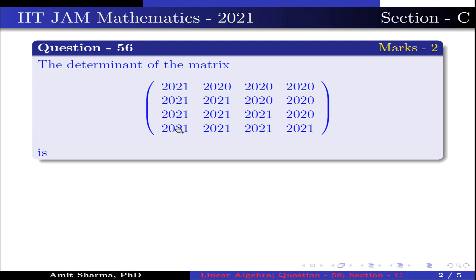2021, 2021, 2021, 2020 in the third row, and 2021, 2021, 2021, 2021 in the fourth row.